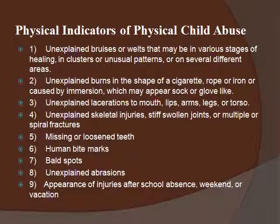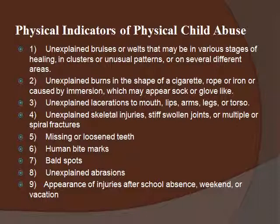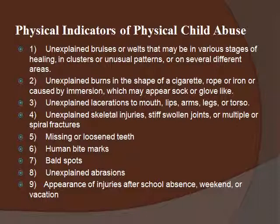Other physical indicators include unexplained lacerations to the mouth, lips, arms, legs, or torso; unexplained skeletal injuries, stiff or swollen joints, and multiple or spiral fractures. A spiral fracture has a spiral quality — like a bottle cap thread — and can only be caused by twisting. If you grab someone's arm and twist, or grab a child's ankle as they're running away, that may result in a spiral fracture. Falling cannot cause a spiral fracture, so there is always another human being involved. That simply does not happen accidentally.